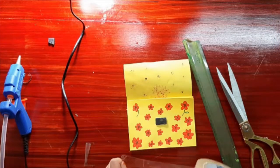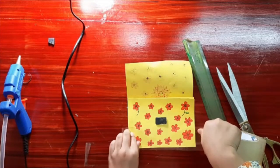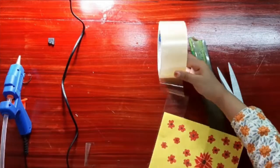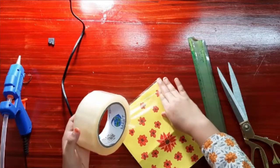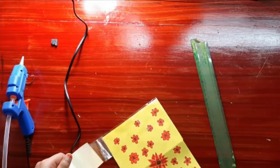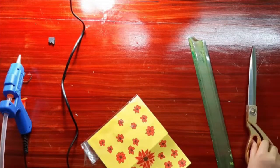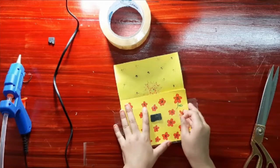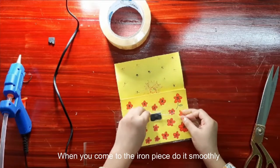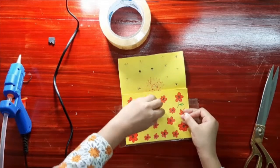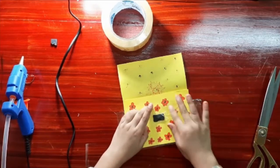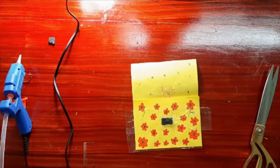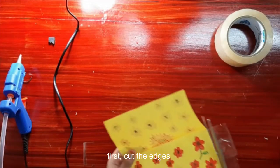Step five: start with the cello tape. First, cut the edges and take the tape.